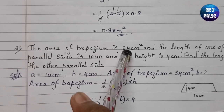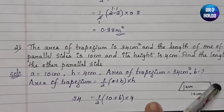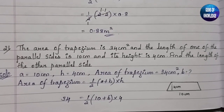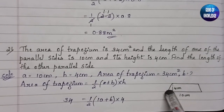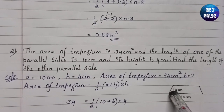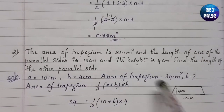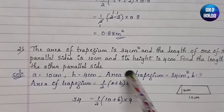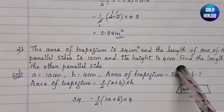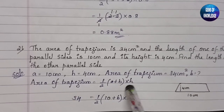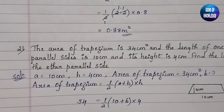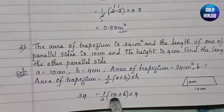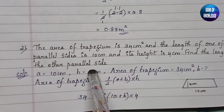Question 2: The area of a trapezium is 34 centimeter square. The length of one of the parallel sides is 10 centimeter and its height is 4 centimeter. Find the length of the other parallel side. So a = 10 cm, h = 4 cm, area = 34 cm square, and we need to find b. Writing the formula: 34 = half into (10 + b) into 4.